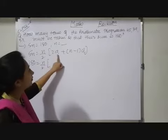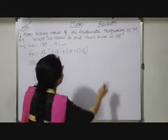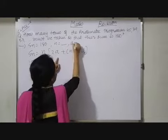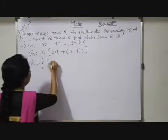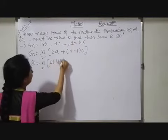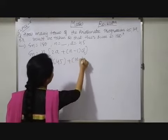Now A, so A we will find out from AP. So here first term of AP, let me write down A equals to 45. So here we will write 2 times 45 plus N minus 1.